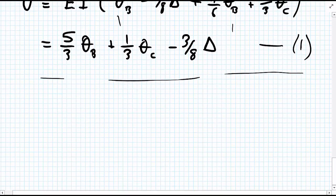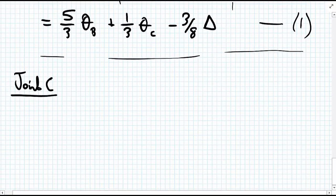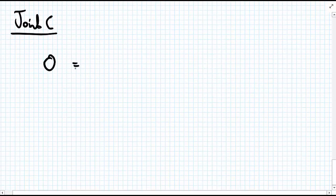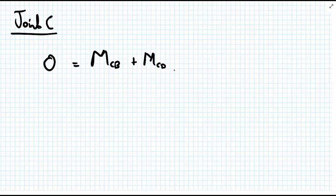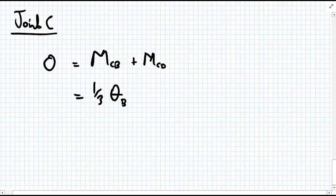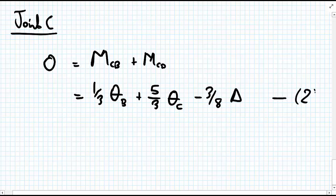We do exactly the same for the equilibrium of joint C: M_CB plus M_CD equals zero. Substituting for M_CB and M_CD, eliminating EI, and collecting like terms, we get Equation 2: 1/3 theta_B plus 5/3 theta_C minus 3/8 delta equals zero.